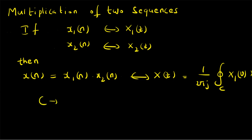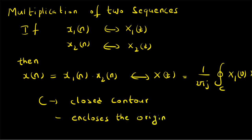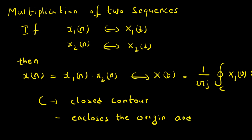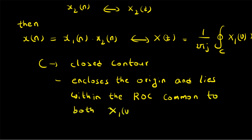Here, C is a closed contour that encloses the origin and lies within the ROC common to both X1(v) and X2(1/v). That is the ROC for the Z transform of the product.